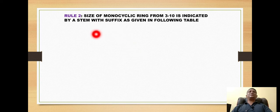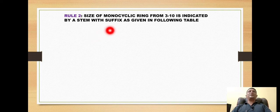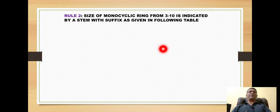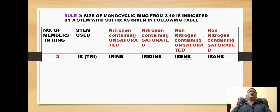The next rule is that the size of the monocyclic ring, from three-membered to ten-membered, is indicated by a stem with a suffix as given in the following table. For naming heterocycles, we use a combination of prefix and suffix: prefixes for the heteroatoms, and suffixes for the size of the ring. For three members, we use the stem 'ir', taken from 'tri'.